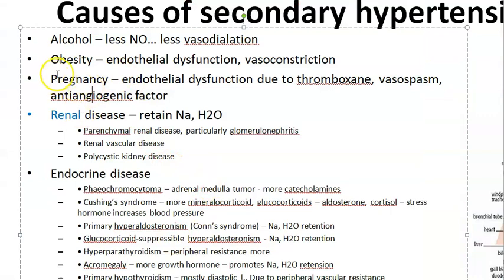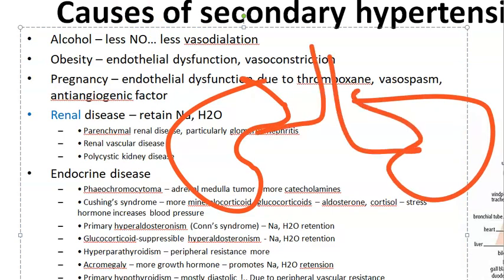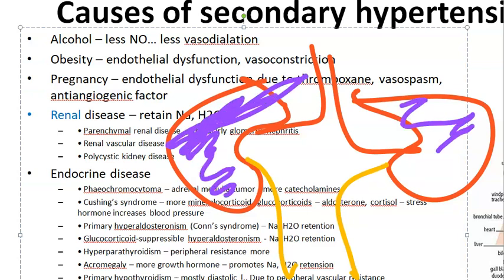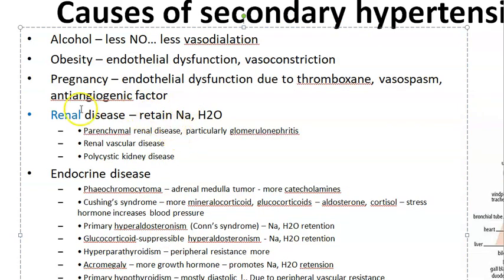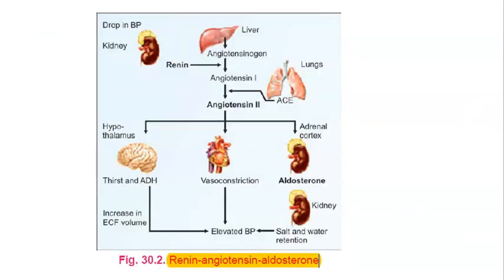In renal disease, the kidney wants blood to filter and make urine. If there is a problem in the kidney, it thinks it is not getting enough blood, so the renin-angiotensin-aldosterone system (RAAS) activates. The kidney makes renin, which converts angiotensinogen to angiotensin I, then the lungs provide ACE to convert it to angiotensin II, and the whole target of angiotensin II is to elevate the blood pressure.